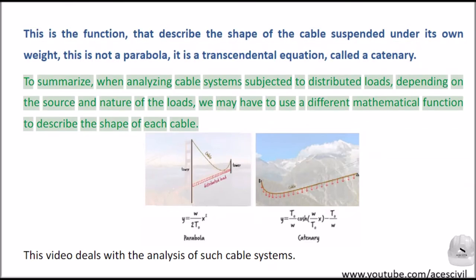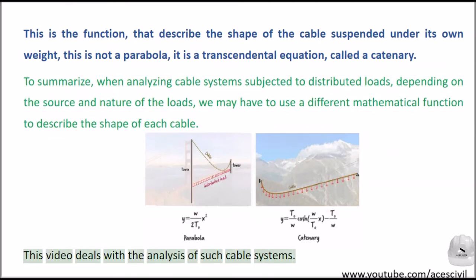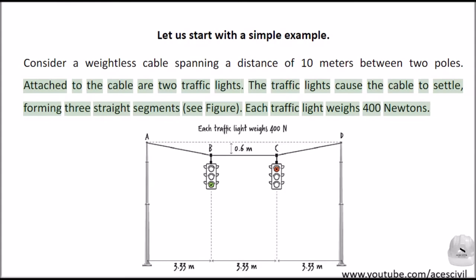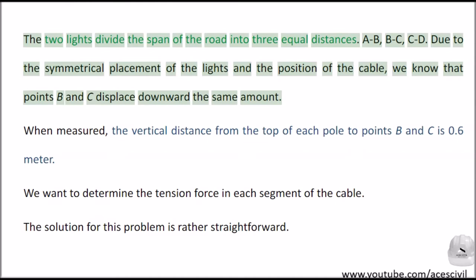To summarize, when analyzing cable systems subjected to distributed loads, depending on the source and nature of the loads, we may have to use a different mathematical function to describe the shape of each cable. This video deals with the analysis of such cable systems. Let's start with a simple example. Consider a weightless cable spanning a distance of 10 meters between two poles, with two attached traffic lights each weighing 400 newtons. The two lights divide the span of the road into three equal distances.